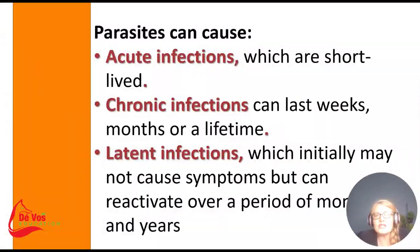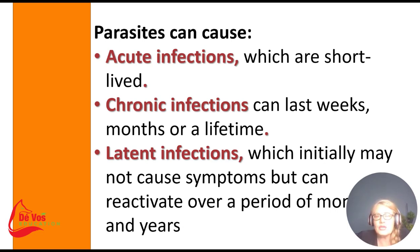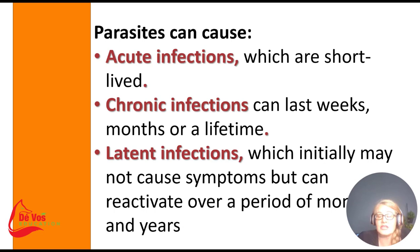Parasites can cause three types of infections in people or in animals. We have the acute infection, which is usually short-lived — like the flu that you get over. Then you have chronic infections that can last weeks, months, or even a lifetime. And then you have latent infections, which initially may not cause symptoms but reactivate over a period of months or years.